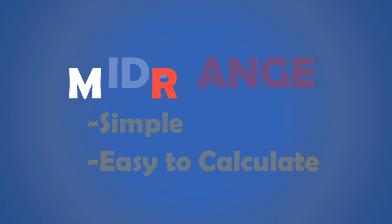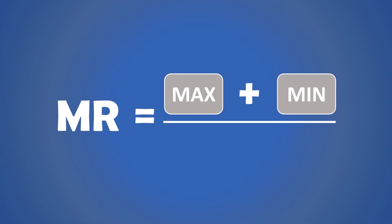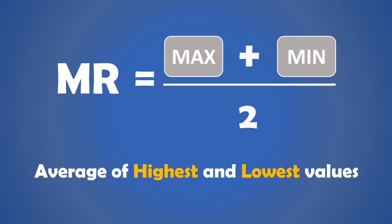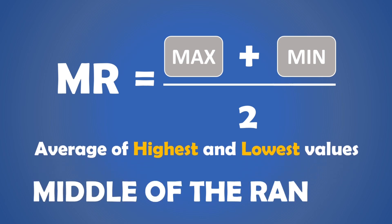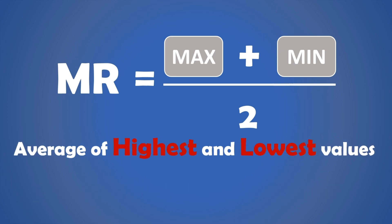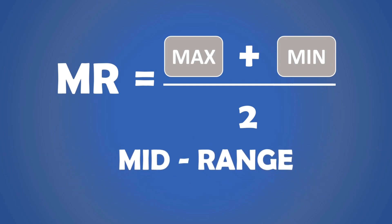The formula for calculating the mid-range is: mid-range equals maximum value plus minimum value divided by two. This is simply the average of the highest and lowest values in a data set. As the name implies, it is the middle of the range — the mid-point between the highest and the lowest values. Hence, the name mid-range.